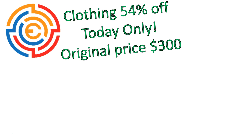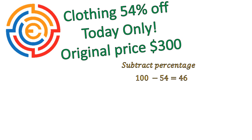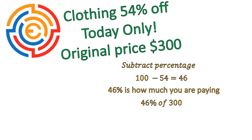Let's look at a couple more examples. If I'm saying a clothing sale, 54% off, today only, and the original price of this clothing is $300, I would first subtract the percent. So I'm going to say 100 minus 54 gives me 46. That means 46% is how much I am paying. So I calculate what's 46% of the $300. To do that, I convert my percent into a decimal — of means multiply — and I'm going to pay $138 for that clothing piece that's labeled at $300.